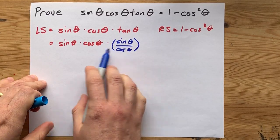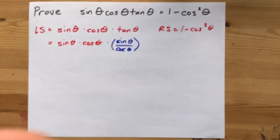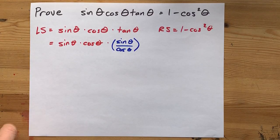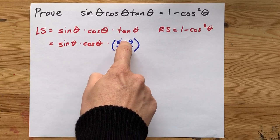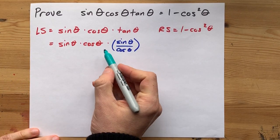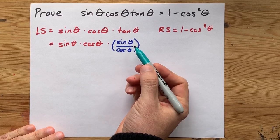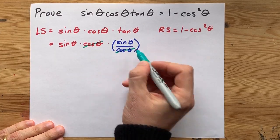By rewriting it into sine and cos, I make it similar to this other stuff that's written beside it. Now I have sine times cos times sine over cos. Because I'm multiplying by cos and dividing by it at the same time, I can cancel them.